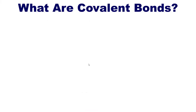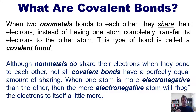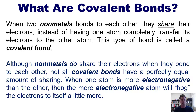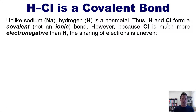We now move on to covalent bonds. When two non-metals bond to each other, they share electrons instead of having one atom completely transfer its electrons to the other. This type of bond is called a covalent bond. Unlike sodium, hydrogen is actually a non-metal. Thus, hydrogen and chlorine, when they bond together, form a covalent, not an ionic bond.